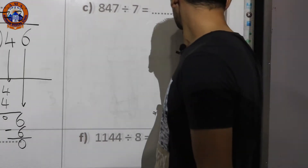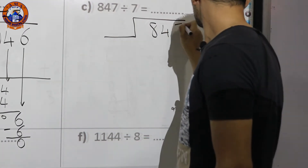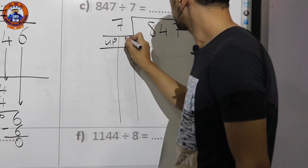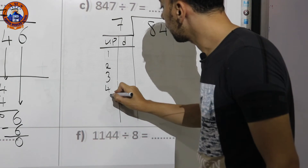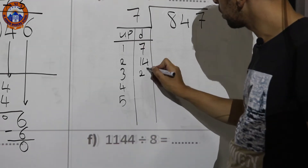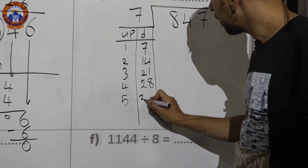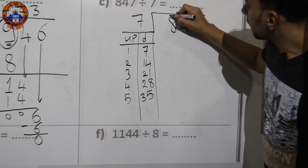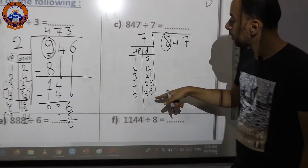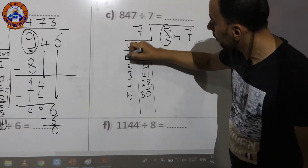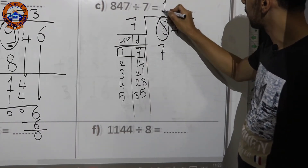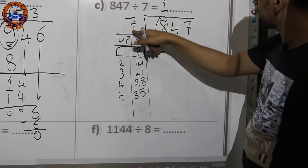Now we divide 847 by 7. I'll make the times table of 7: 7×1=7, 7×2=14, 7×3=21, 7×4=28, 7×5=35. Taking the first digit 8 — search for 8 in the table; it's not there, but the nearest is 7. Put 7 down and 1 up. Multiply: 1×7=7. Subtract: 8−7=1.